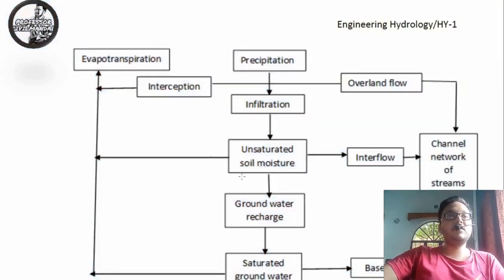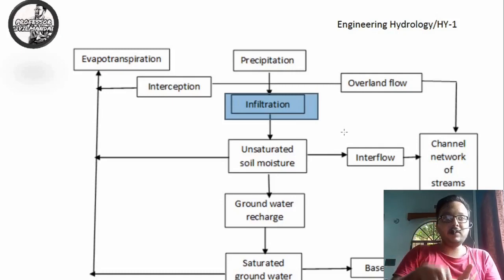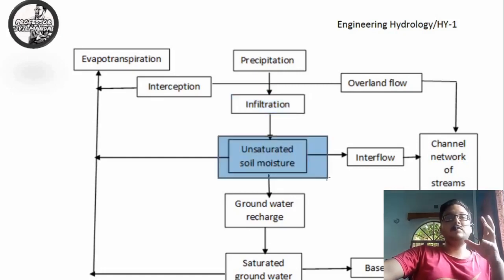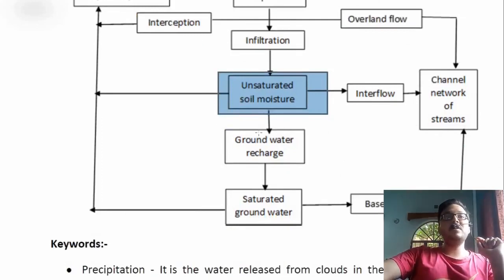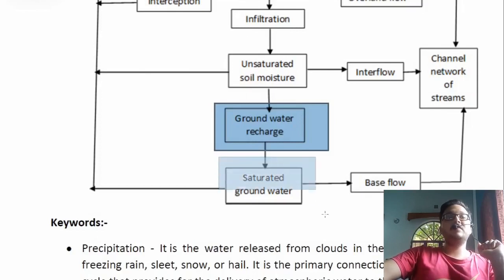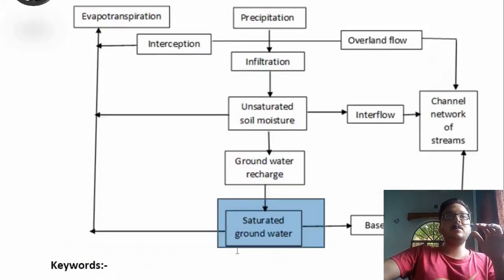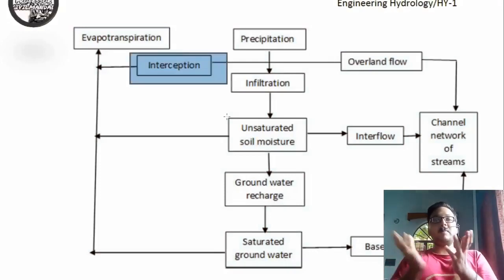Precipitation falls down to the ground surface and we have infiltration, where water stored on the surface percolates down to the groundwater. Next is unsaturated soil moisture — a mixture of soil and water. This unsaturated soil moisture contributes to groundwater recharge, eventually saturating the groundwater at a certain level by filling the ground beneath us with water.